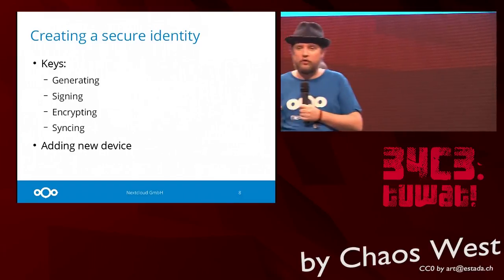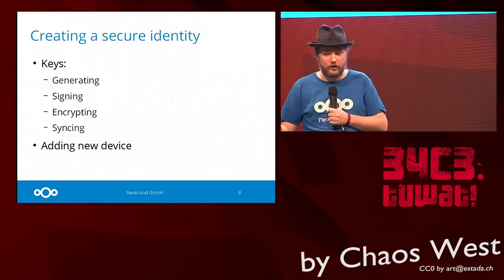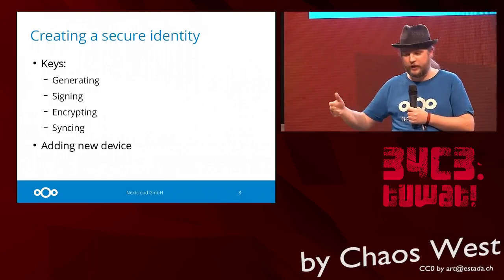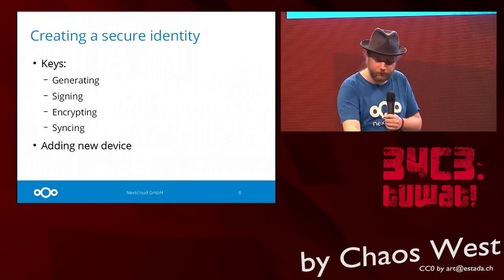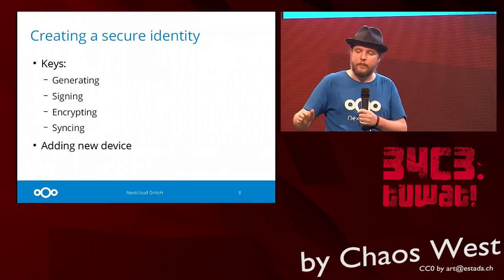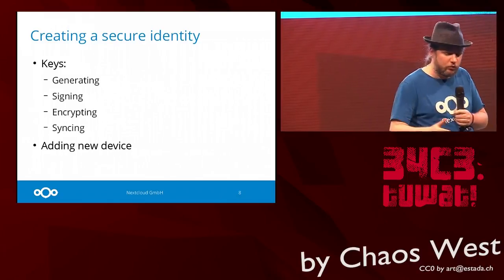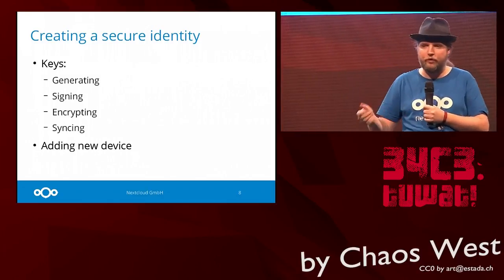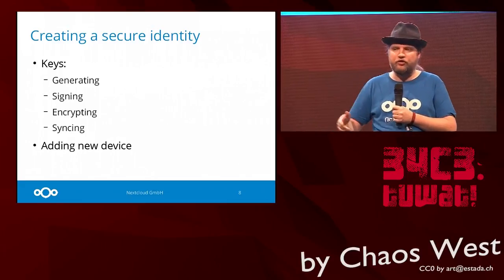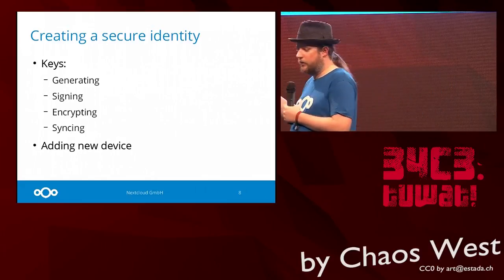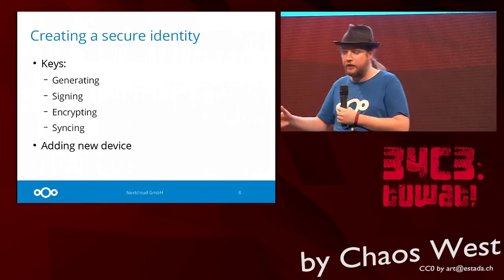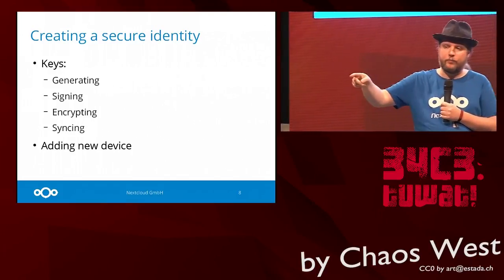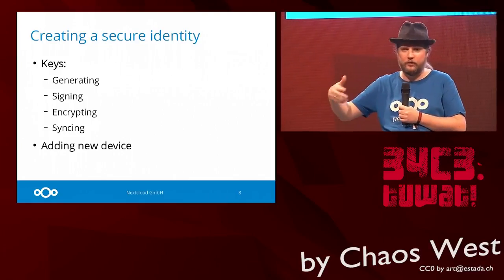I'm going to start with creating an identity. To set it up initially, the client creates a public-private key pair on the device. It requests a certificate from the server for that key pair and uploads the public key to the server. If other people share with you, they share to this public key, checking the certificate — that's how we protect your identity for others.